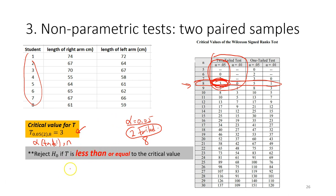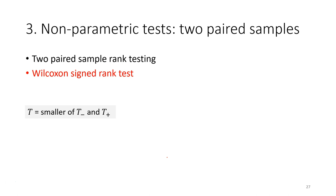We reject the null hypothesis if the test score T is less than the critical value — similar to what we did for the Mann-Whitney U test. To get the test score, we need to calculate two values: the total of the negative ranks and the total of the positive ranks.